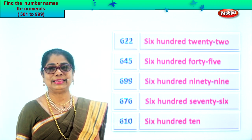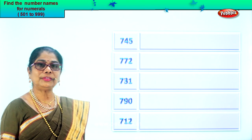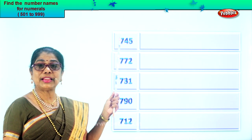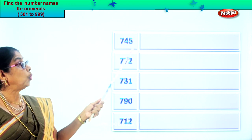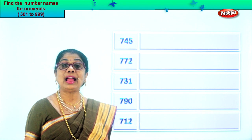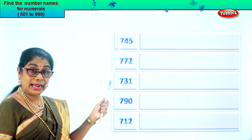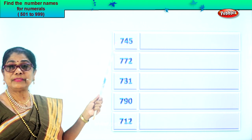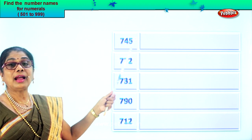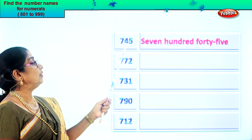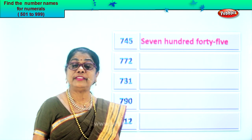Let's take another exercise. Look at the first number: seven, four, five. Five in the ones place, four in the tens and seven in the hundreds place. Let's read the numeral: seven hundred forty-five. So we write seven hundred first, then we write forty-five. Seven hundred forty-five. Good.